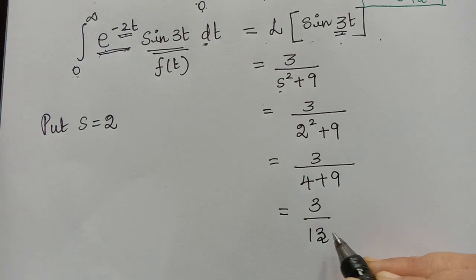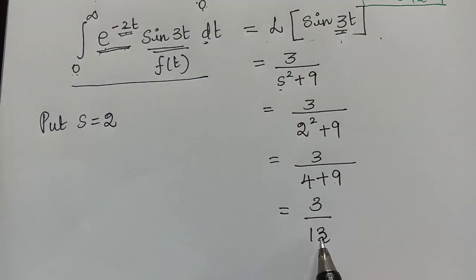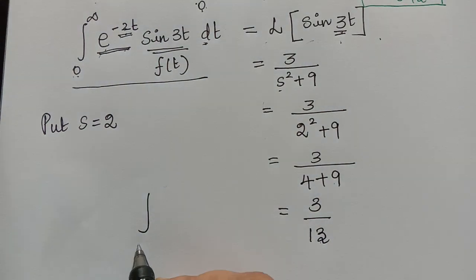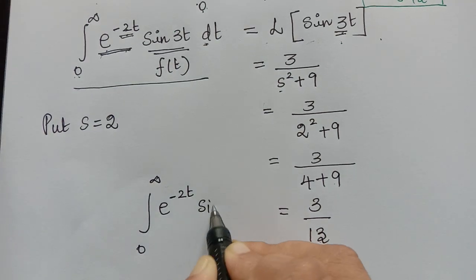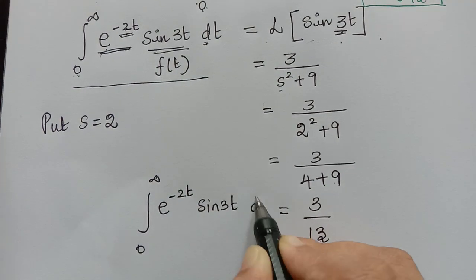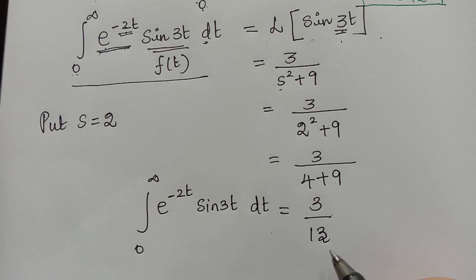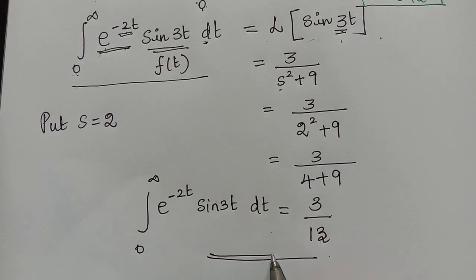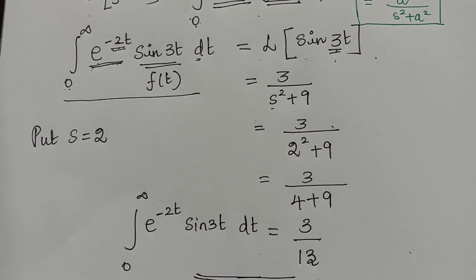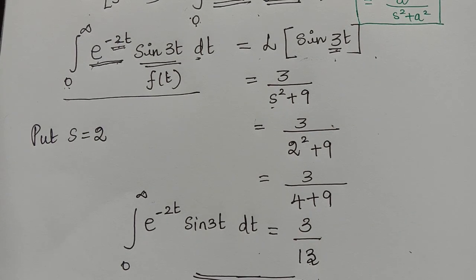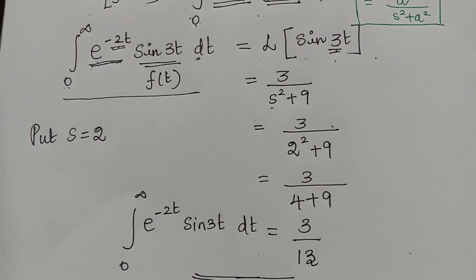Therefore this integral is equal to 3 by 13. That is, the integral from 0 to infinity of e to the power negative 2t times sin 3t dt is equal to 3 by 13. This is the value of the integral we have evaluated. Hope you have understood this problem. In our next video lecture, we will evaluate a very important integral using Laplace transform. Kindly follow the next video lecture. Thank you.